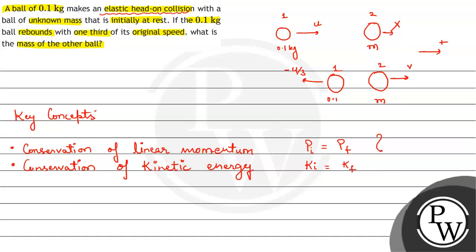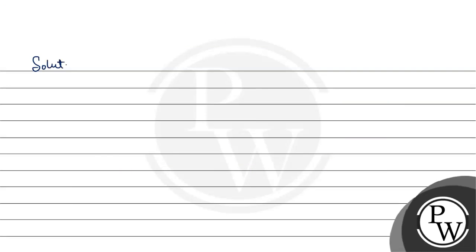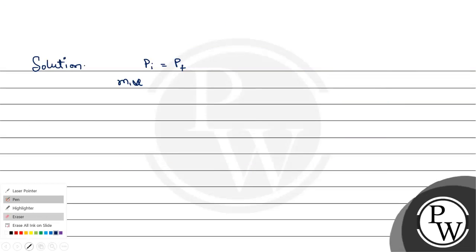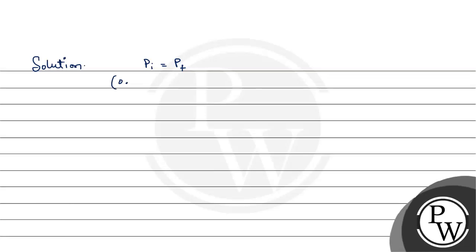For the solution, let us apply conservation of linear momentum: pi = pf. So pi is given by m1·u1 — putting values directly: 0.1·u plus m·0 equals the final momentum.